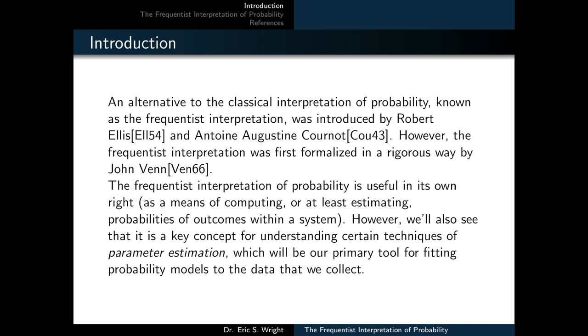Frequentist Interpretation of Probability is useful in its own right as a means of computing or at least estimating probabilities of outcomes within a system. However, we'll also see that it's a key concept for understanding certain techniques of parameter estimation, which will be our primary tool for fitting probability models to the data that we collect.